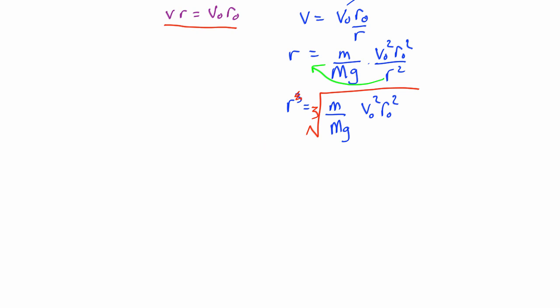And so that should tell us where things will even out at that radius. And you could then substitute that back into here to find the velocity at this particular position.